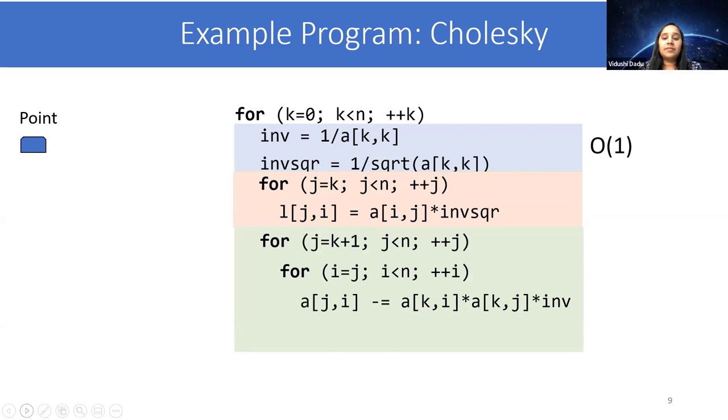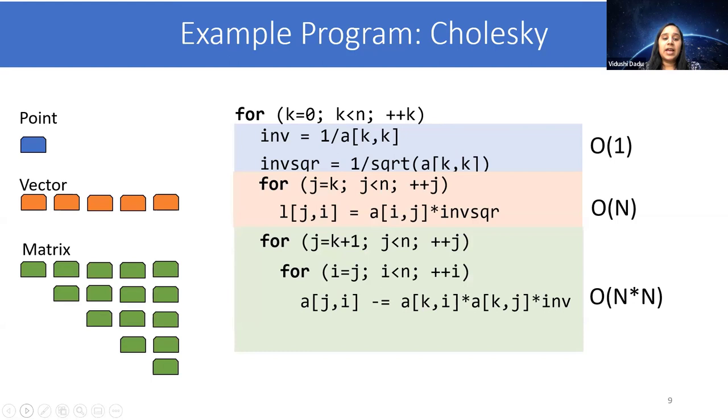Starting with computations, there are three kinds of computations. One is scalar computation, which we call point, then computation on a vector, and then on a matrix. As these computations have different computational complexity, Cholesky has heterogeneous tasks.